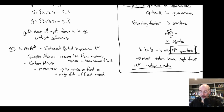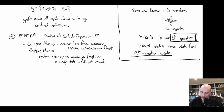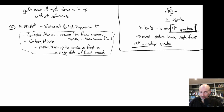EPEA* uses collapse and restore as a general technique. The enhanced part says: in many domains, we can generate only the states at the current f cost. When expanding a node, instead of generating all b^k children, we generate only those children whose f cost equals the current node's f cost.